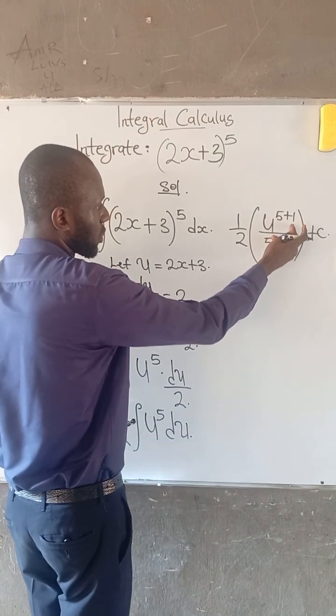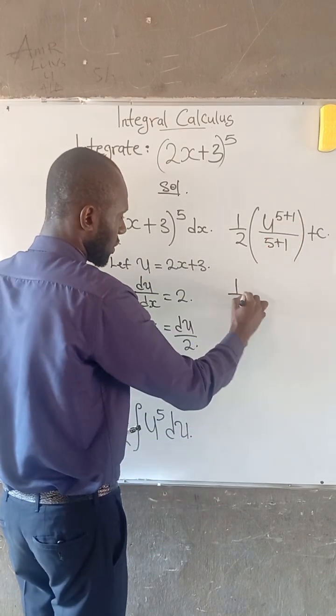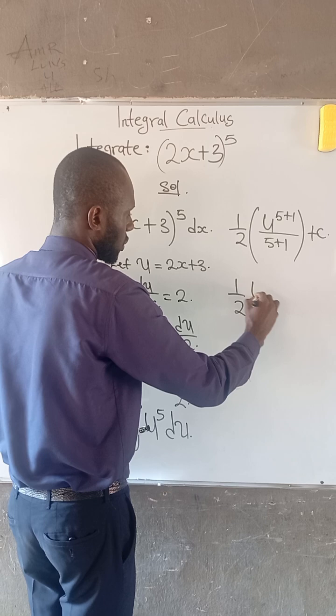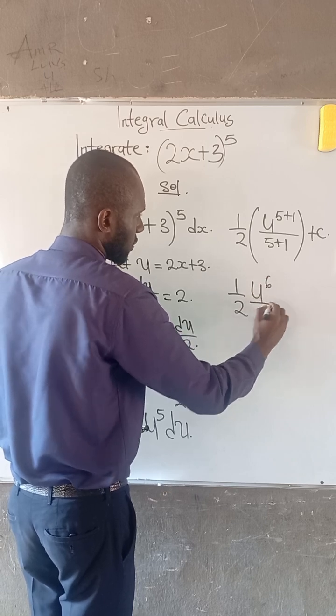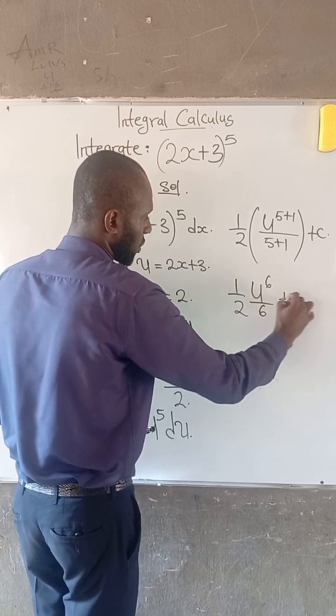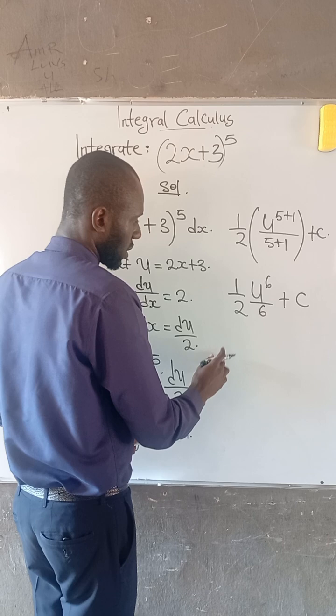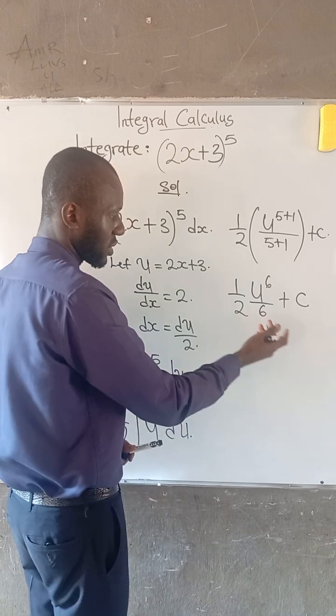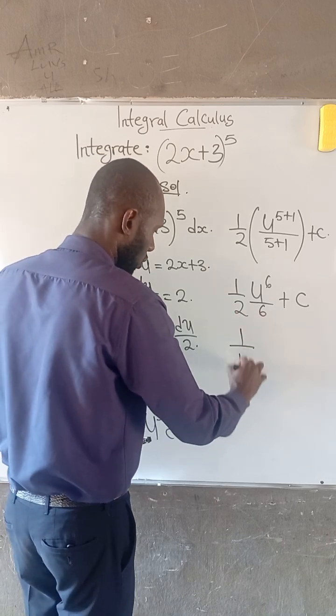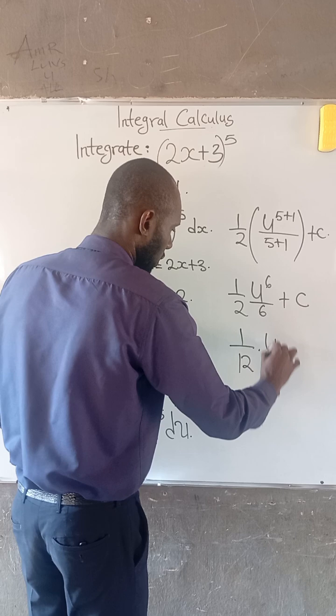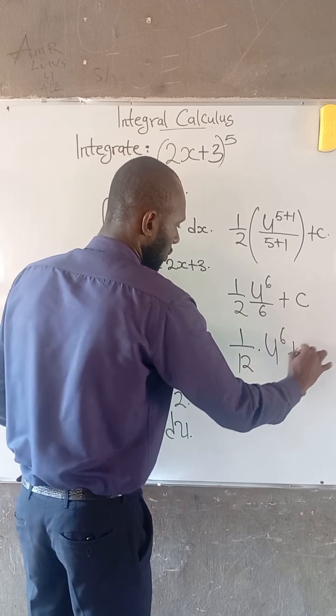So therefore, 5 + 1 is 6. This is 1/2 u to the power of 6 divided by 6 plus a constant of integration. And we know that 2 times 6 is 12. So we have 1/12 multiplied by u to the power of 6 plus c.